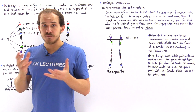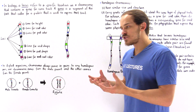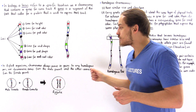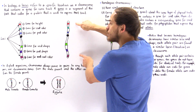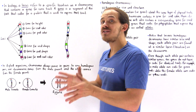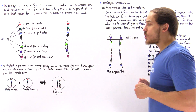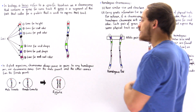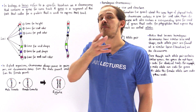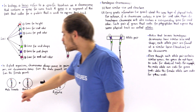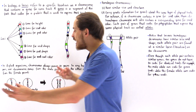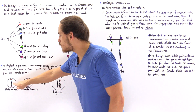In any diploid organism — any 2n organism — every single chromosome comes in a pair. In humans, even though we have 46 individual chromosomes, we actually have 23 pairs of chromosomes, and each pair is called a homologous pair. One chromosome came from the female gamete and the other from the male gamete. When the sperm and egg combine, they form the zygote, giving us 2n chromosomes — 46 total in humans.